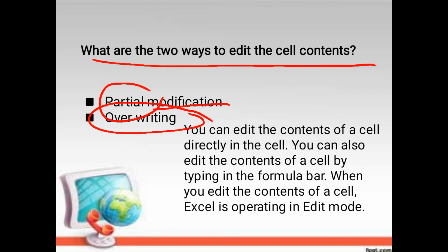So there are two ways to edit cell contents: you can edit cell contents directly in the cell, as we can read in overwriting. You can also edit the cell content by typing in the formula bar. This procedure can be used in both modifications. When you edit the cell content, Excel is operating in edit mode.